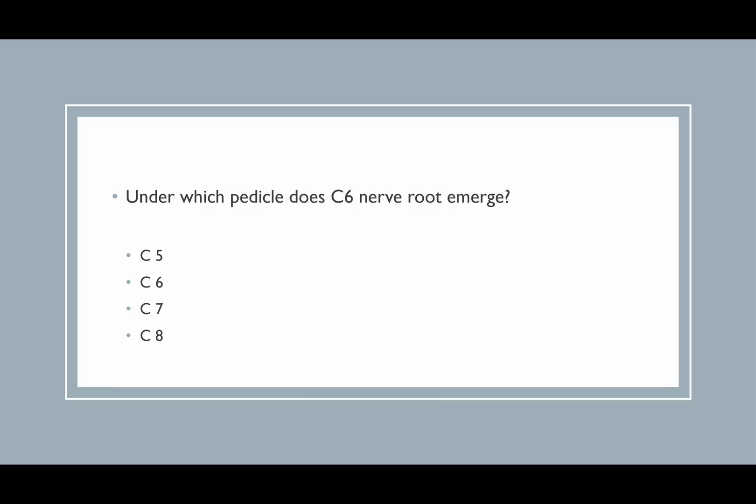Question: under which pedicle does the C6 nerve root emerge? Remember there are eight nerve roots and seven vertebrae. The C6 nerve root comes out under the C5 vertebral body — distal to the C5 vertebra, as shown in the anatomy slide.